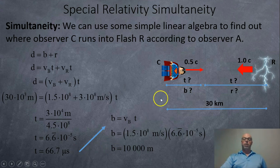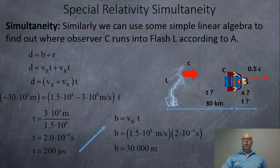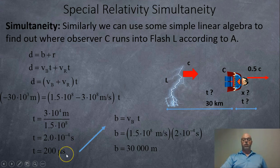In observer A's reference frame, the rest frame, where is observer C going to be when the right flash finally hits them? So doing the same kind of linear algebra, we'll see that it's going to occur at 66.7 microseconds, not 100 microseconds. And this person will be 30,000 meters or 10 kilometers to the right of observer A. So that flash is definitely going to run into them first.